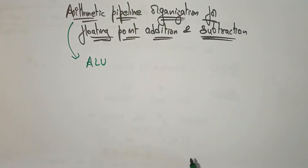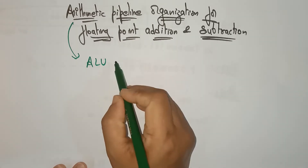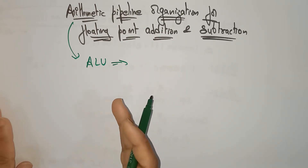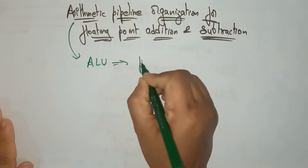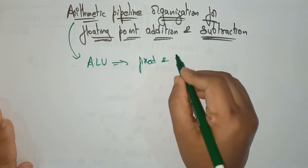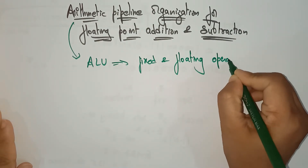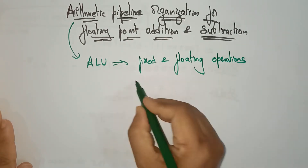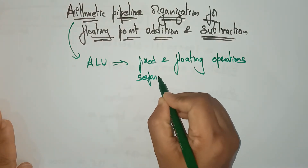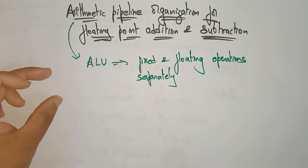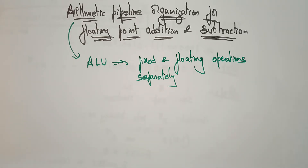Before starting, I want to give a brief idea: when we talk about arithmetic, we think of the arithmetic logic unit, which is the main unit performing these operations. This arithmetic logic unit performs both fixed point and floating point operations — each separately. Fixed point operations are performed separately and floating point operations are also performed separately.